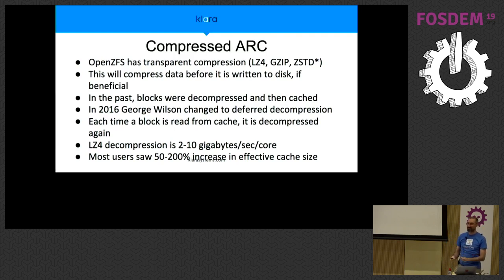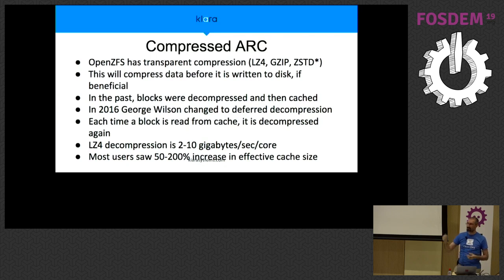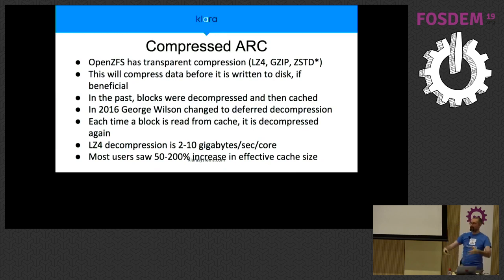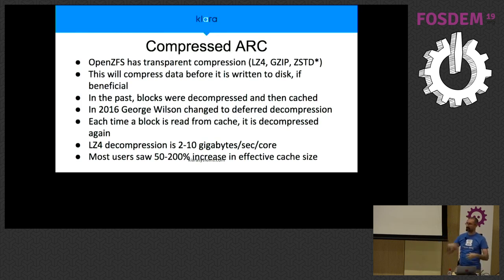With the compressed ARC optimization, we delay the decompression step. After reading the data from disk, we store the compressed version in the cache, and when an application wants the data, we take the copy from cache in memory, decompress it, and feed it to the application. Even though you're decompressing it each time it comes from cache, LZ4 compression — used by default — can decompress at two to ten gigabytes per second per core, which is faster than you could have read off disk, so it doesn't introduce additional latency. Storing data compressed can actually give lower latency because you're reading fewer bytes off disk.